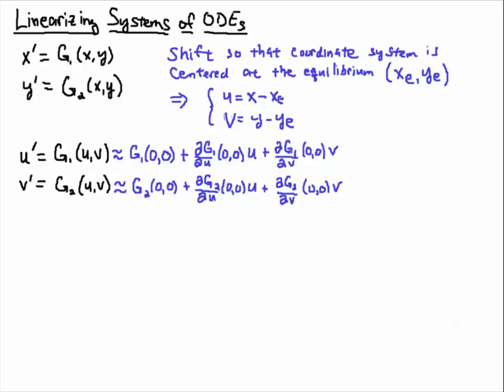Now I'll expand g1 and g2 with a multivariable Taylor series expansion. I'm expanding about the new origin, which is the equilibrium point in the old coordinate system, in the xy coordinate system. Remember, if you plug in the equilibrium point in the xy coordinate system, you get zero.